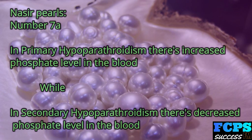Nasir Pearl number 7b: In primary hypoparathyroidism there is increased phosphate level in the blood, while in secondary hypoparathyroidism there is decreased phosphate level in the blood.